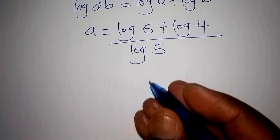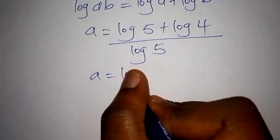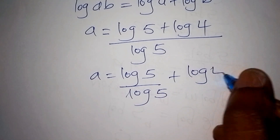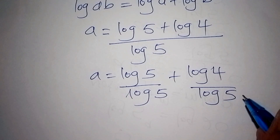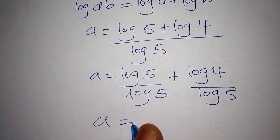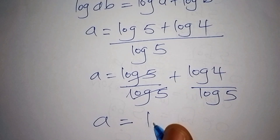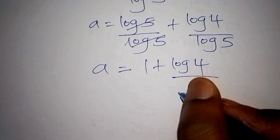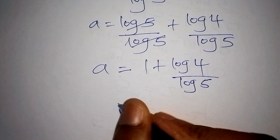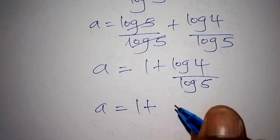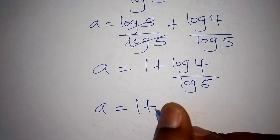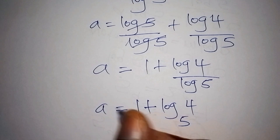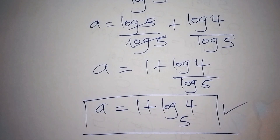We now split the fraction: a equals log 5 over log 5 plus log 4 over log 5. Since log 5 over log 5 cancels to 1, we have a equals 1 plus log 4 over log 5. Using the change-of-base rule, this is written as 1 plus log base 5 of 4. This is our final answer.